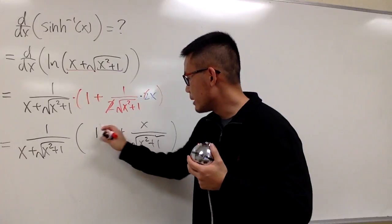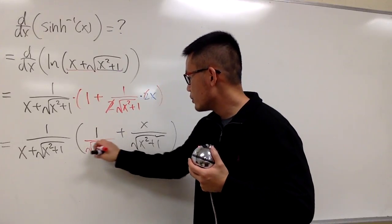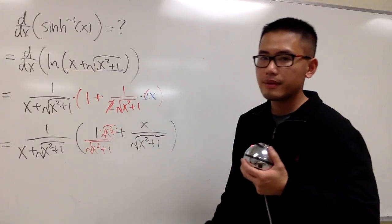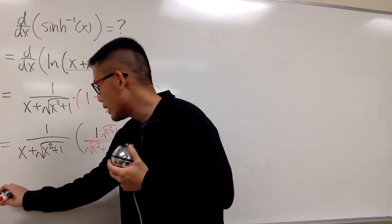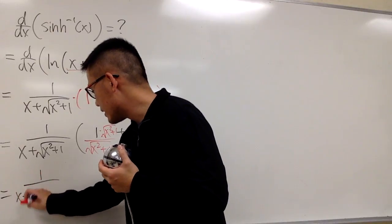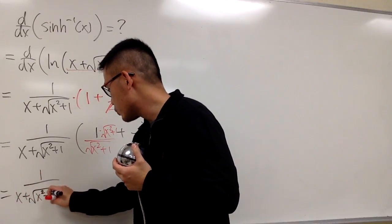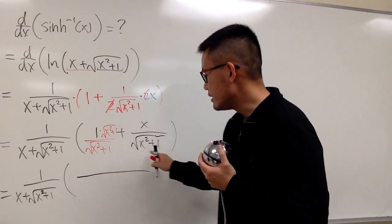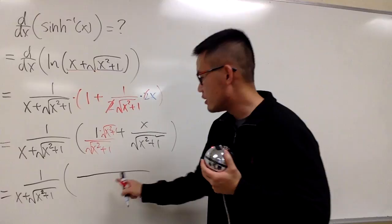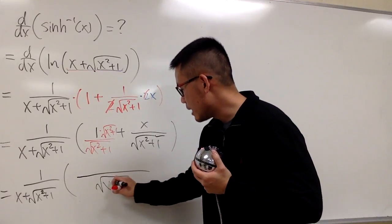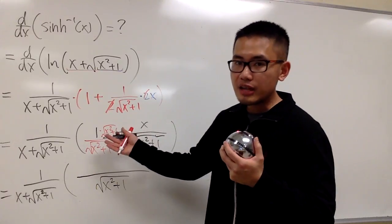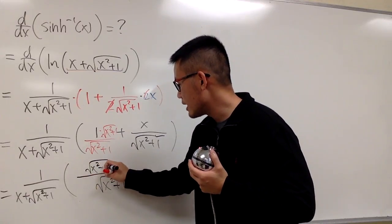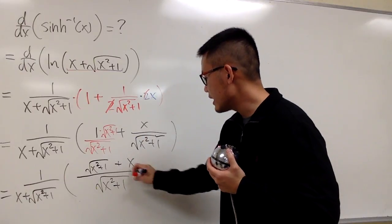Right here, let me just multiply the 1 by square root of x squared plus 1 on the bottom, and also do the same on the top, like this. And now you'll see, the outside is still the outside, 1 over x plus square root of x squared plus 1. And inside here, now they have the same denominator, so I'll just put them down together right here with the same denominator, x squared plus 1. On the top, this is just square root of x squared plus 1, and then we add it with this, which is just x.